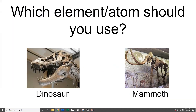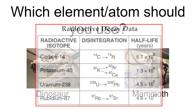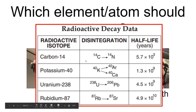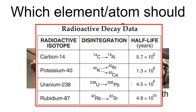So if we go back and look at the reference table — pulling that up here — we have these radioactive isotopes, their disintegration products, and their half-lives. Since mammoths existed closer to today, we are going to use carbon-14. The reason for that is because the half-life is shorter.